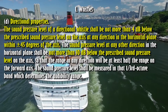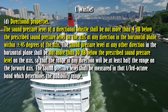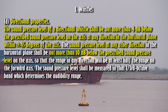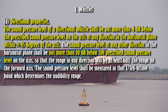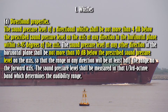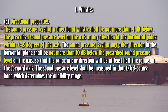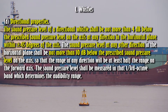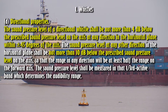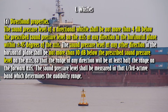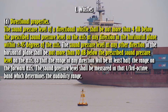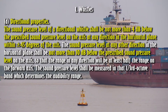D. Directional properties. The sound pressure level of a directional whistle shall be not more than 4 dB below the prescribed sound pressure level on the axis at any direction in the horizontal plane within plus or minus 45 degrees of the axis. The sound pressure level at any other direction in the horizontal plane shall be not more than 10 dB below the prescribed sound pressure level on the axis, so that the range in any direction will be at least half the range on the forward axis. The sound pressure level shall be measured in that one-third octave band which determines the audibility range.